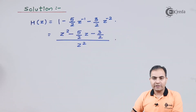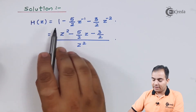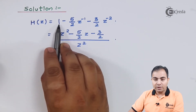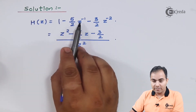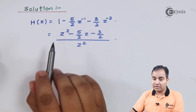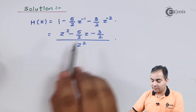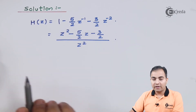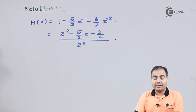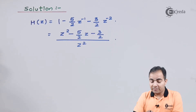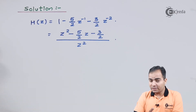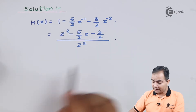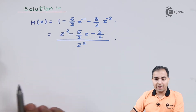After multiplying by z², the equation becomes: z² into 1 is z²; z² into z⁻¹ gives z¹ since 2 minus 1 equals 1; and z² into z⁻² gives z⁰ since 2 minus 2 equals 0. Anything raised to the power 0 is always 1, so we are left with 3/2 only.